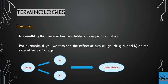Before talking about experimental unit, we need to understand what a treatment is. Treatment is basically something that a researcher administers to the experimental unit. For example, if we want to look at the effect of two drugs and their side effects, we need to define treatments. Drug A is one treatment and Drug B is another treatment, and we may also include a placebo — no drug — to compare against.